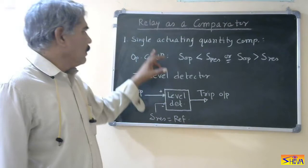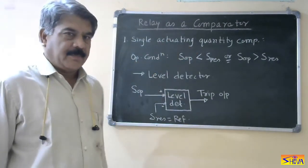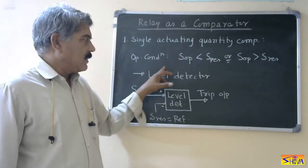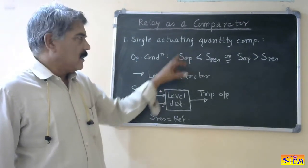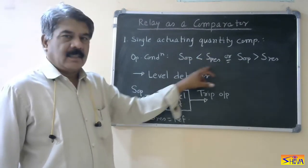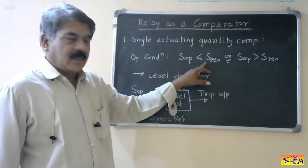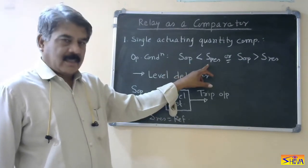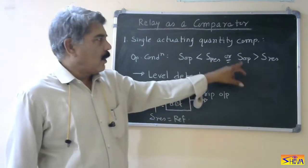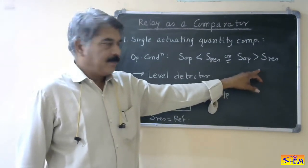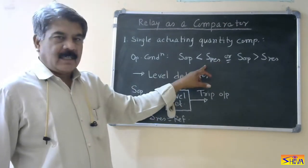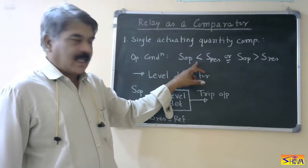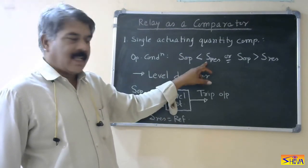Let us start with the comparator with single actuating quantity. In this single actuating quantity comparator, the operating condition involves S-operating, the operating quantity, and a restoring or reference quantity. The operating condition may be: operating quantity less than restoring quantity, or operating quantity greater than the restoring quantity. If we consider the first condition, it may be an undervoltage or undercurrent type, because the operating quantity is less than the restoring quantity.